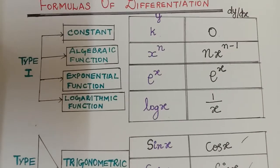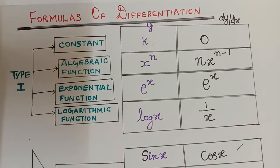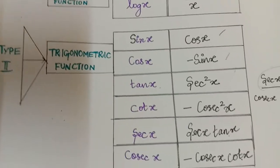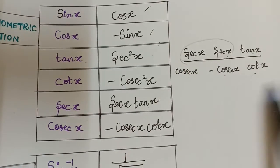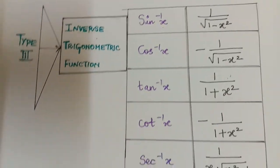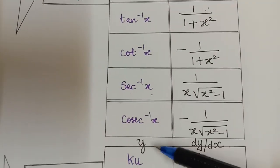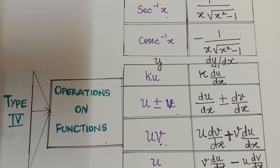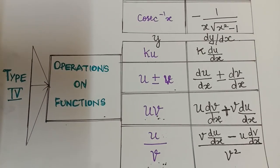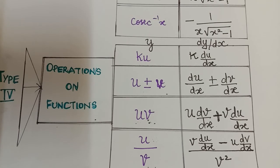Quickly, a revision of all four types: Type 1 covered constant, algebraic, exponential, and logarithmic formulas. Type 2 covered trigonometric functions using the row trick for the last four formulas. Type 3 covered inverse trigonometric functions, where cos⁻¹ is the negative of sin⁻¹, cot⁻¹ is the negative of tan⁻¹, and cosec⁻¹ is the negative of sec⁻¹. Type 4 covered operations on functions. In our next videos we will proceed with basic differentiation problems. Thank you.